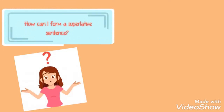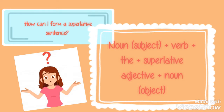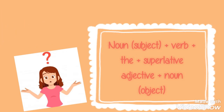How can I form a superlative sentence? We start with the noun which is the subject, we add to it the verb, then the superlative adjective, and finally we put the noun or the object. Let's see examples together.